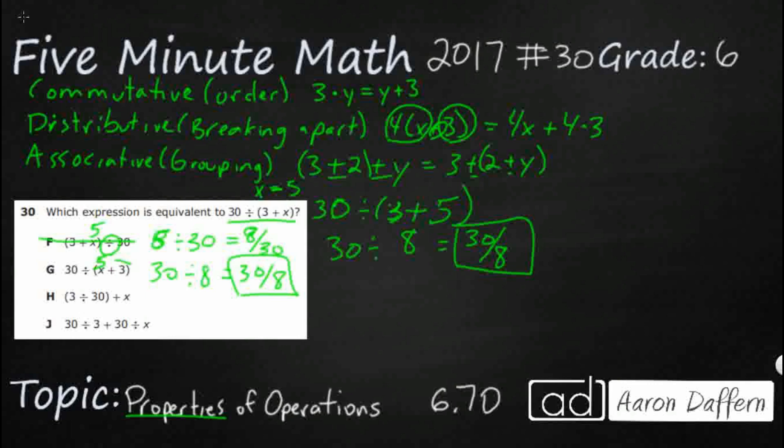Now, what's the difference? Look what they have here. They have x plus 3, and they have 3 plus x. So, this definitely is the commutative property. They're just flipping the order. And as long as it's either multiplication or addition, you can change the order of the addends or the factors, and it doesn't change. So, I'm pretty sure that's going to be your answer.